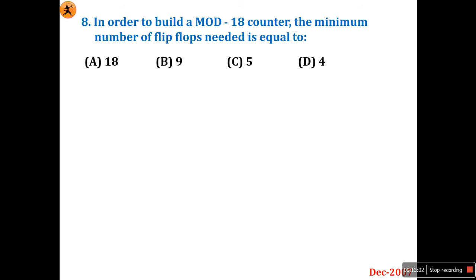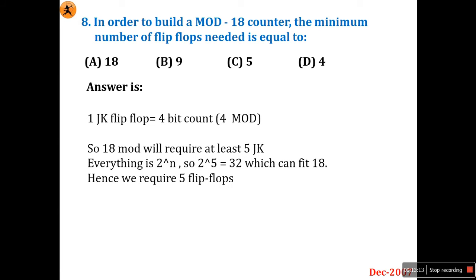Question number eight: to build a mod-18 counter, the minimum number of flip-flops needed is equal to? One flip-flop gives a 2-bit count. Four flip-flops give 2^4 = 16 counts, which is not enough for mod-18. Five flip-flops give 2^5 = 32, which covers 18. So option C — five flip-flops — is the right answer.